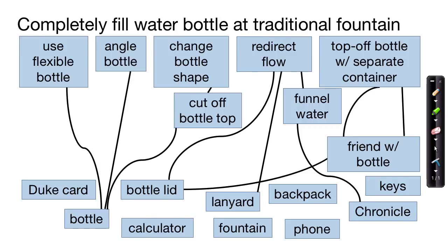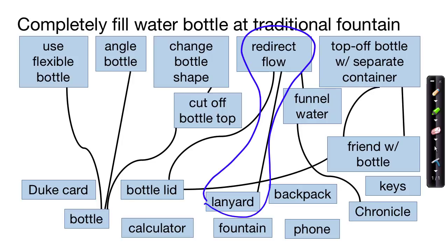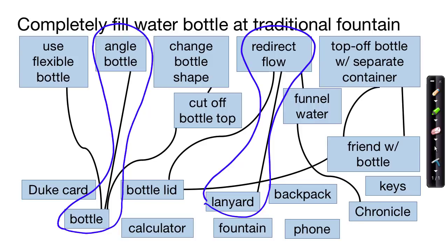Let's take a look at this final diagram. We've found some connections, and maybe we could find more if we spent more time with resources or refining the sub-goals. Looking at the solutions we've come up with: we could redirect the flow using a lanyard, we could angle the bottle to try to get more water into it, and we could redirect the flow by funneling water using a school paper. There are many other ideas found in this diagram.